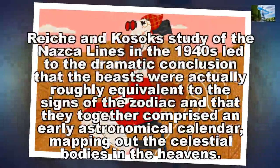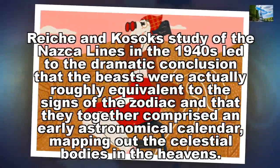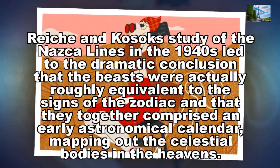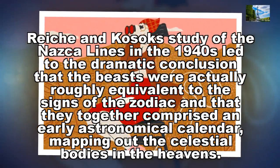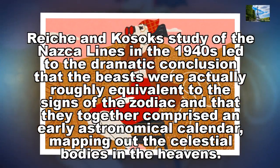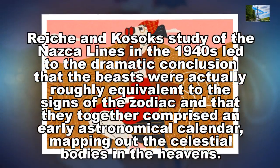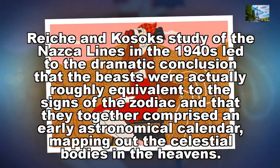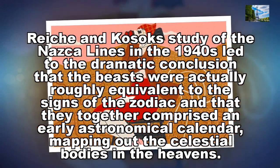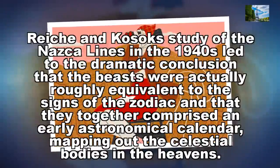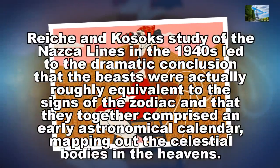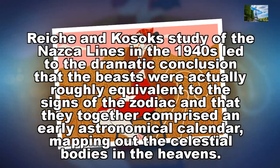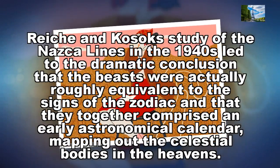Reiche and Kozak's study of the Nazca Lines in the 1940s led to the dramatic conclusion that the beasts were actually roughly equivalent to the signs of the zodiac and that they together comprised an early astronomical calendar, mapping out the celestial bodies in the heavens.